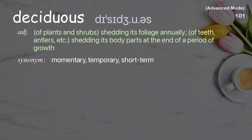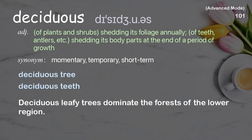Deciduous: of plants and shrubs, shedding foliage annually; of teeth, antlers, etc., shedding body parts at the end of a period of growth. Examples: deciduous tree, deciduous teeth. Deciduous leafy trees dominate the forests of the lower region.